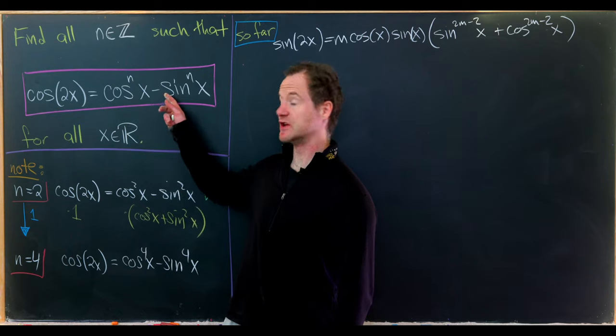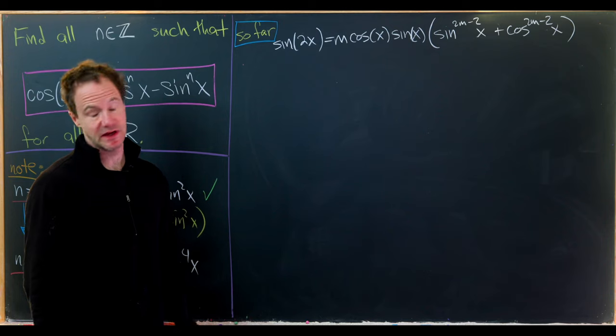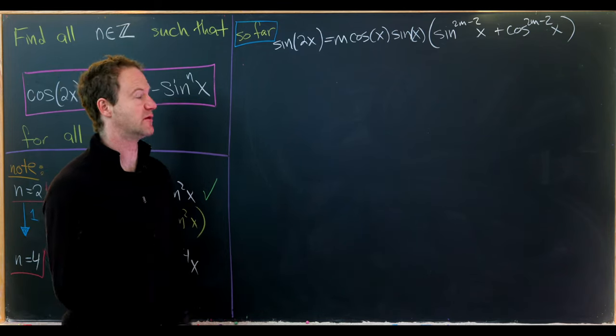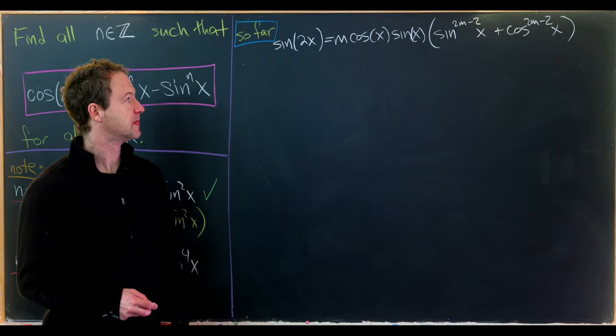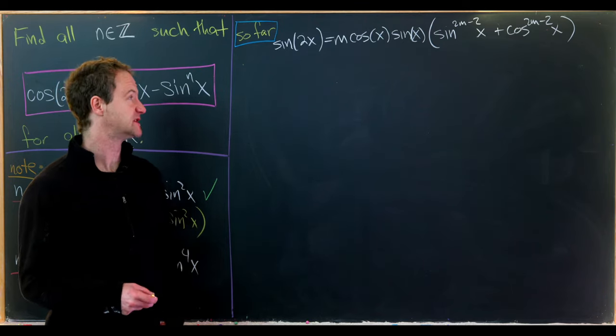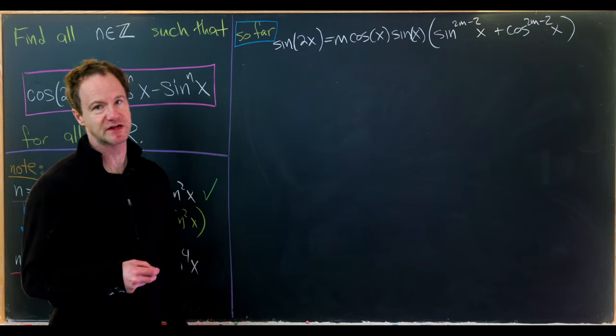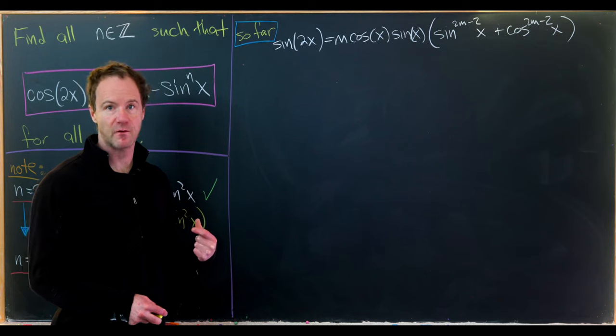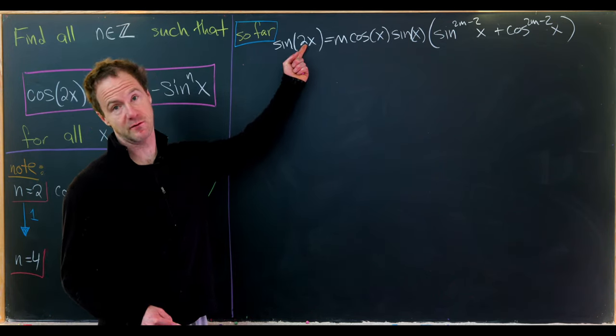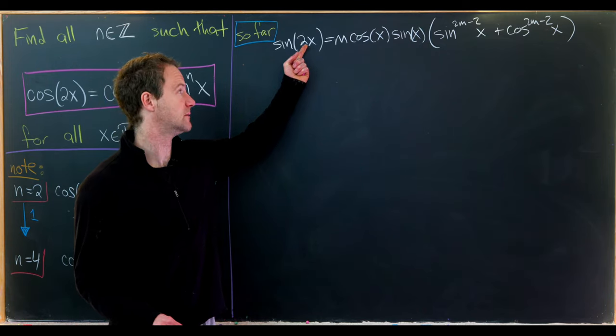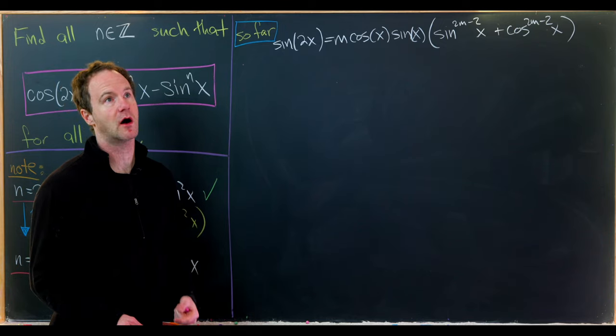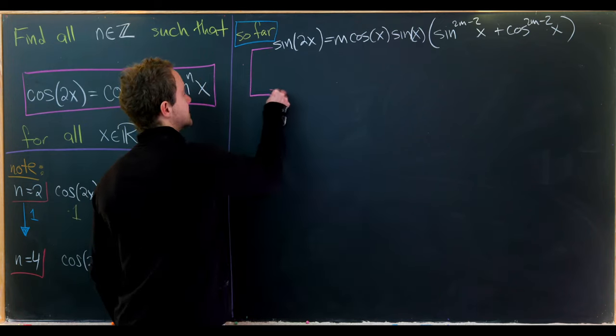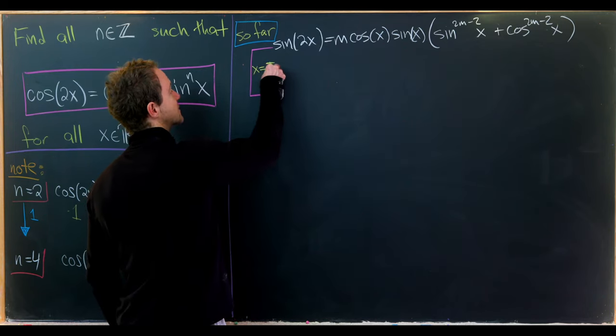On the previous board we derived that if our goal equation was satisfied, then sine of 2x equals m cosine of x sine of x times the sum of the 2m minus 2 powers of sine and cosine. Now we'll evaluate at another specific value of x. I think I'll take π over 4, because sine of 2 times π over 4 is sine of π over 2 which equals 1, and cosine and sine evaluated at π over 4 are both 1 over the square root of 2.